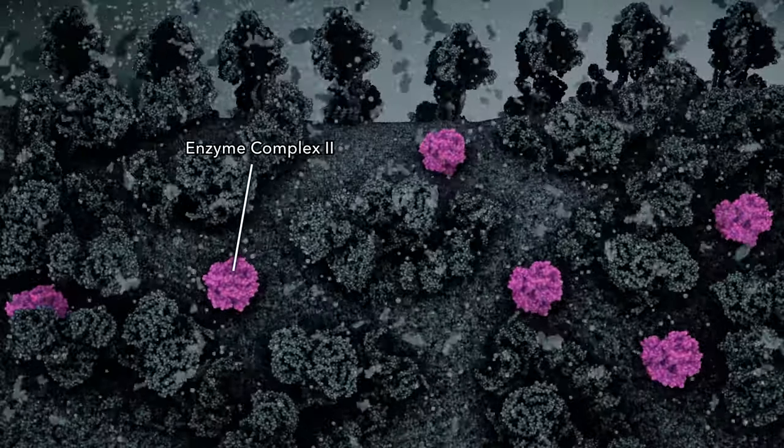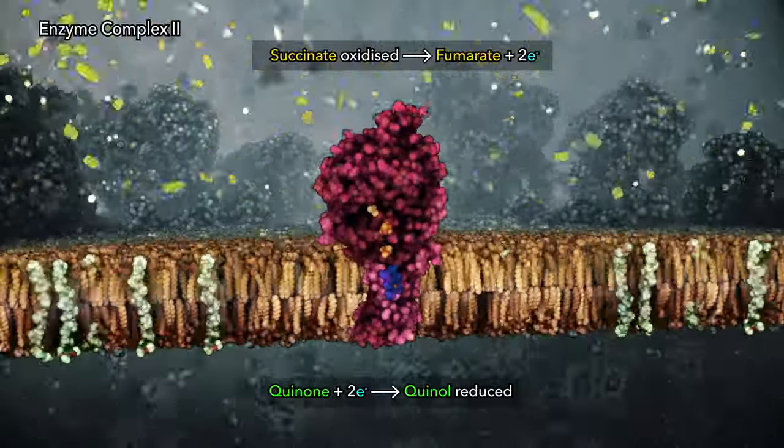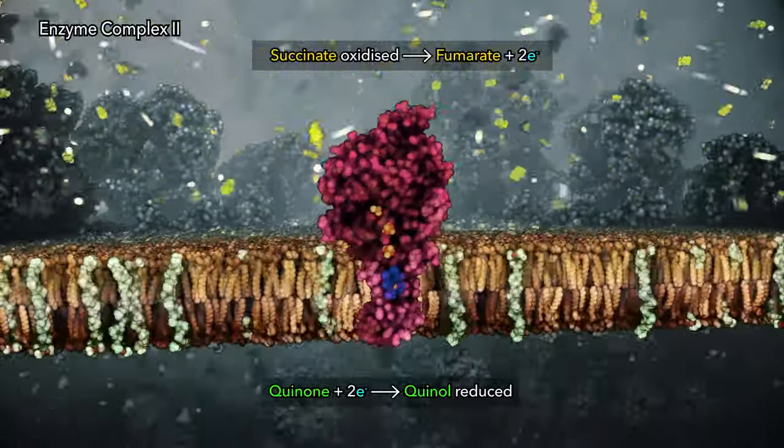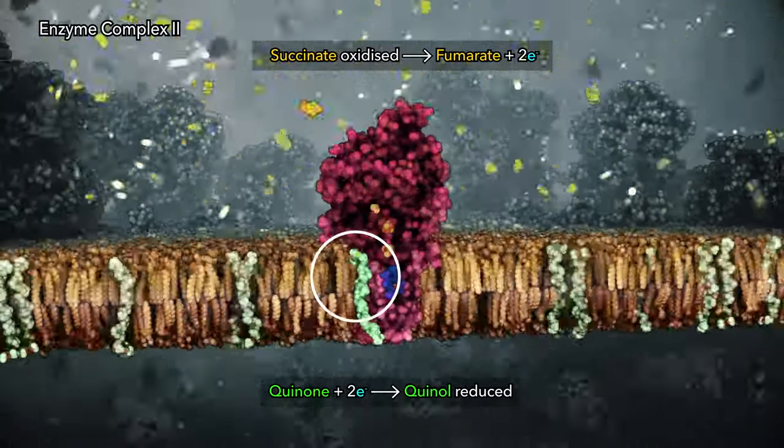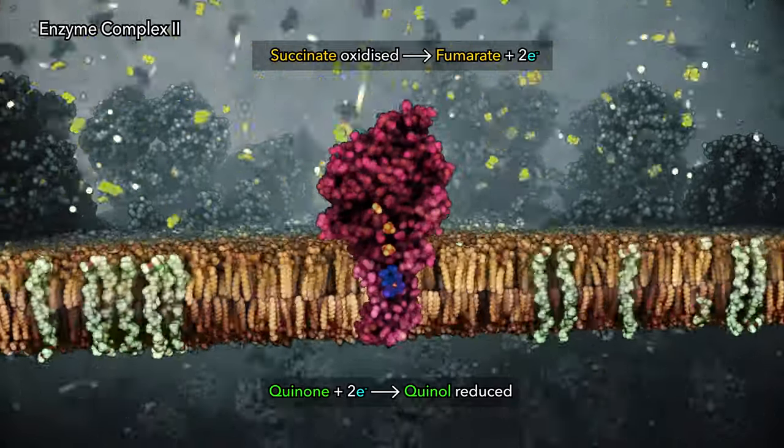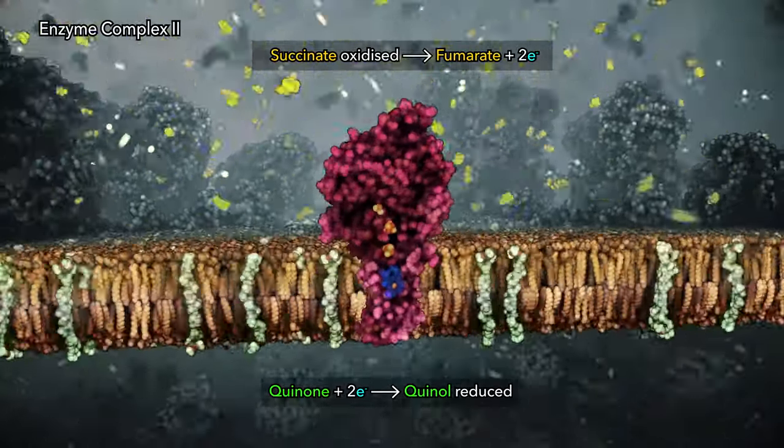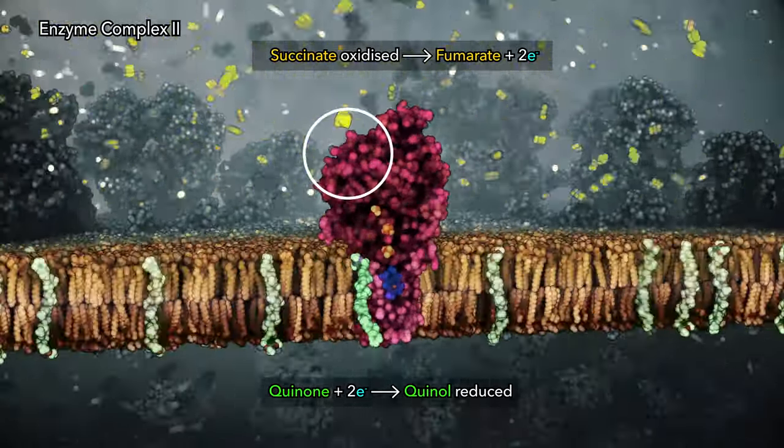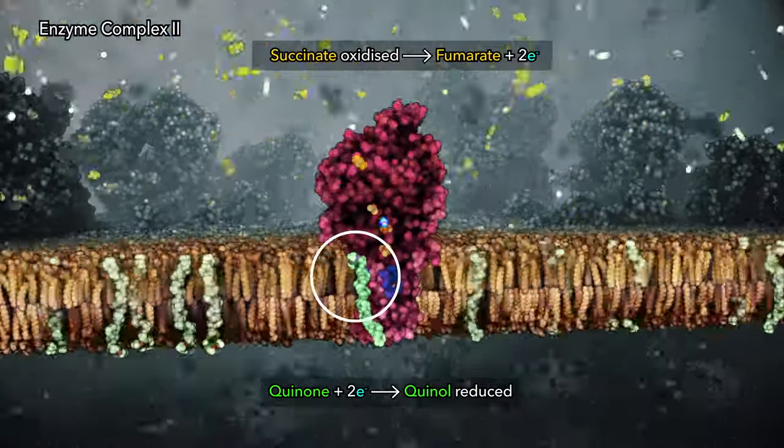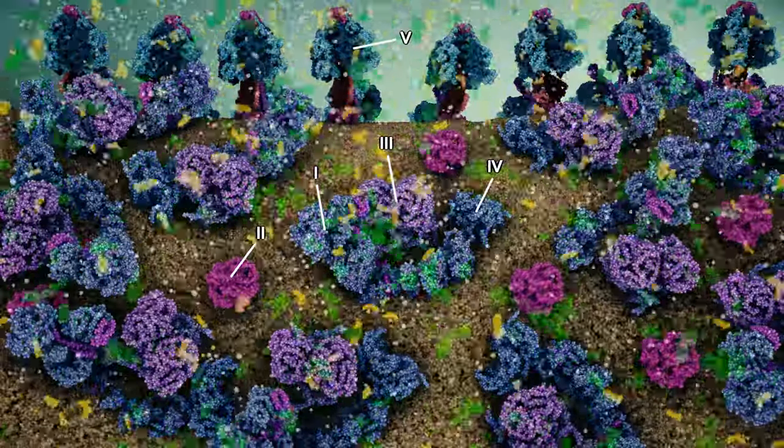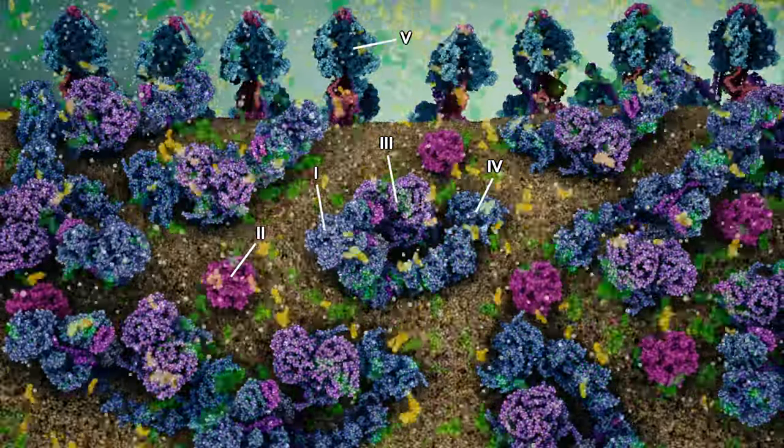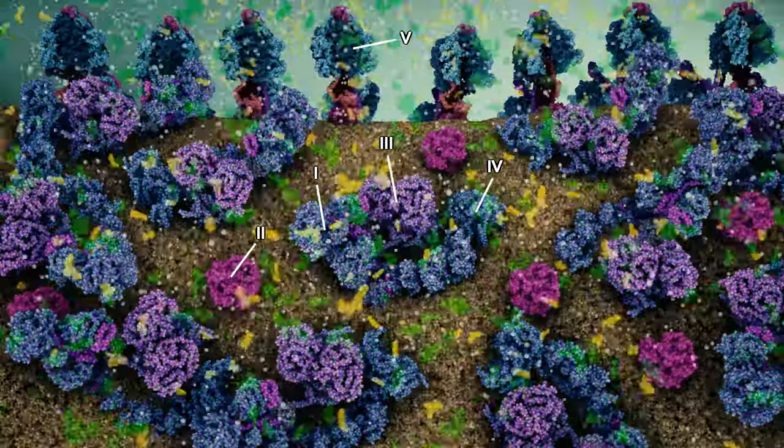Enzyme complex 2 catalyzes oxidation of succinate, releasing two electrons which hop through the enzyme to coenzyme Q, which is reduced. Traveling through the membrane, coenzyme Q carries the electrons to enzyme complex 3 of the electron transport chain.